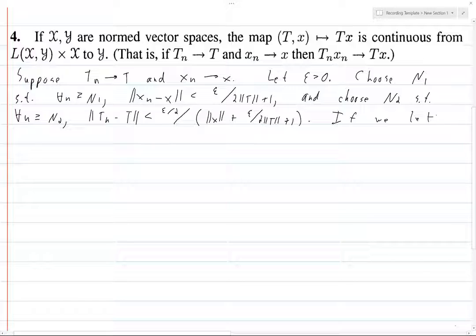If we let n be the max of n1 and n2, then for all n greater than or equal to n, we have basically exactly what we want, but let's write it out.